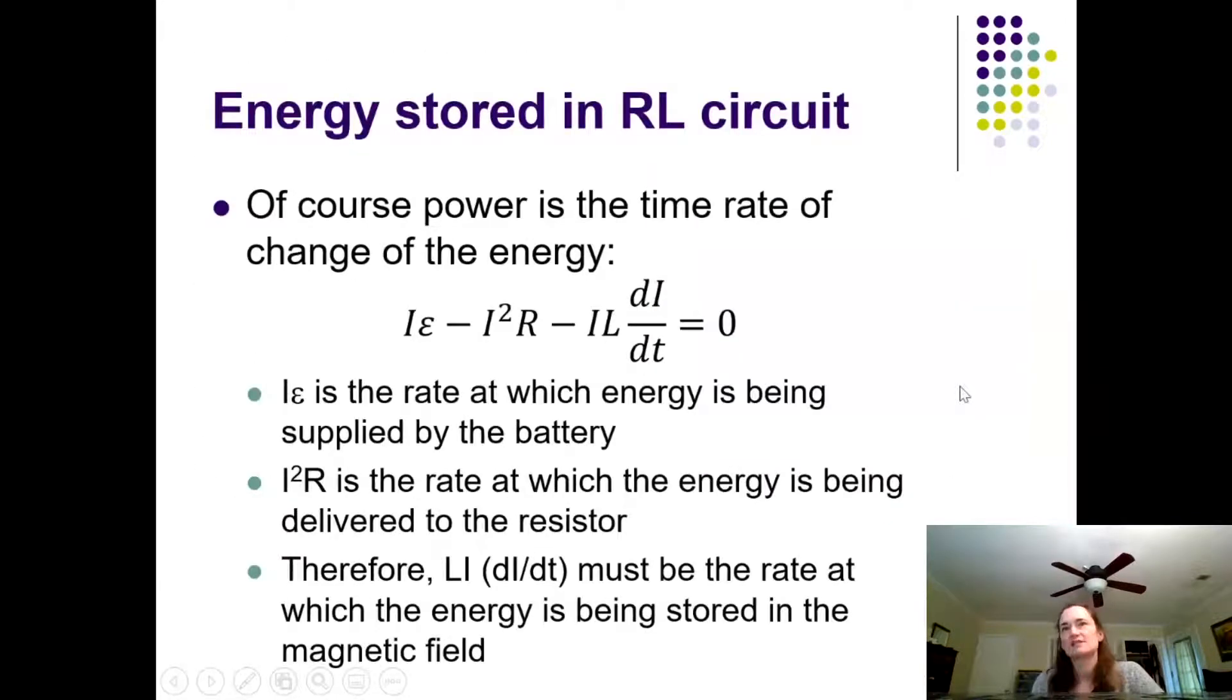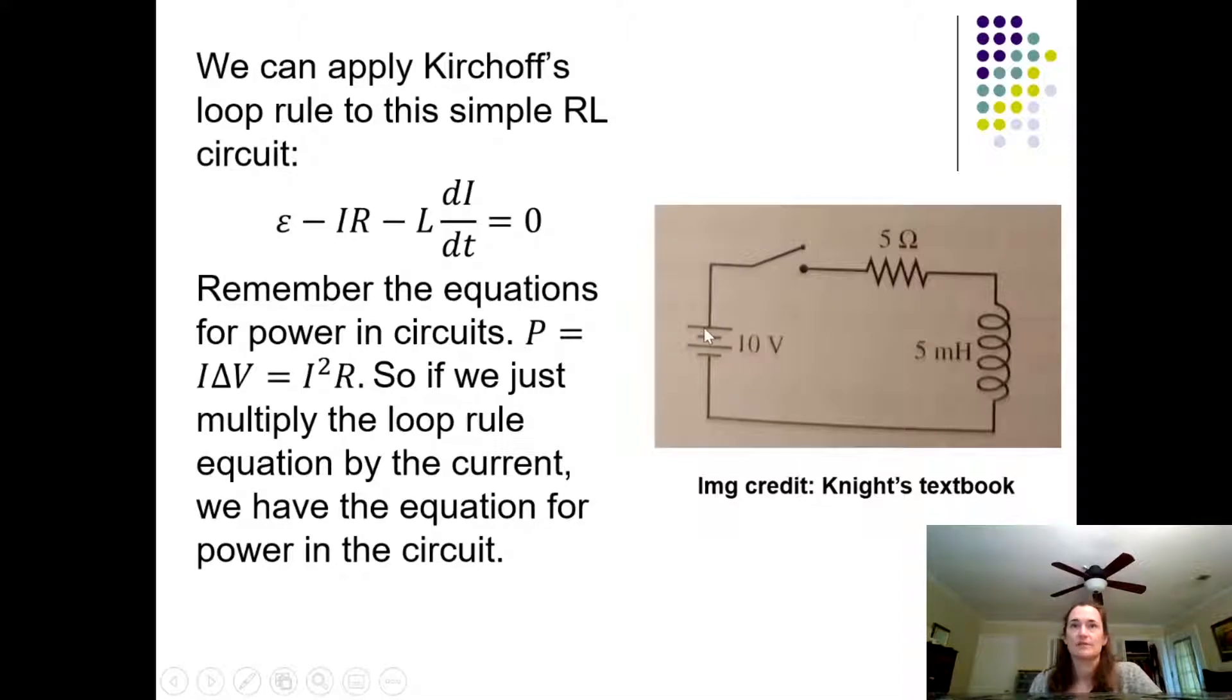Let's look at this simple RL circuit where the resistor and the inductor are in series with a battery. If you were to write the Kirchhoff's loop rule equation for this circuit, it might look like this: the EMF of the battery minus the voltage drop across the resistor, which is minus IR, and then minus the back EMF generated by this inductor, which would be minus L dI/dt, and that would equal zero as you come back around to the back side of your battery. Remember our equation for power in circuits: power is just I times delta V, which for a resistor is I squared R. So if I look at my loop rule equation and multiply everything in that loop rule by I, then I would have I times the EMF of my battery minus I squared R minus LI dI/dt, and that has to equal zero. You can see that if we just multiply the loop rule equation by the current, then we have the equation for power in that circuit.